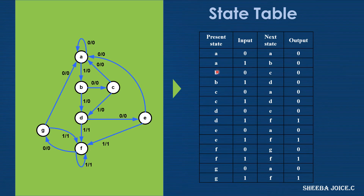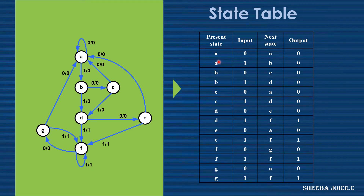The state table can be obtained from this state diagram. When the present state is A and the input is zero, it is going to remain in the same state A with the output zero. In the state table, the present state is A, input is zero, the next state is A, and the output is zero.